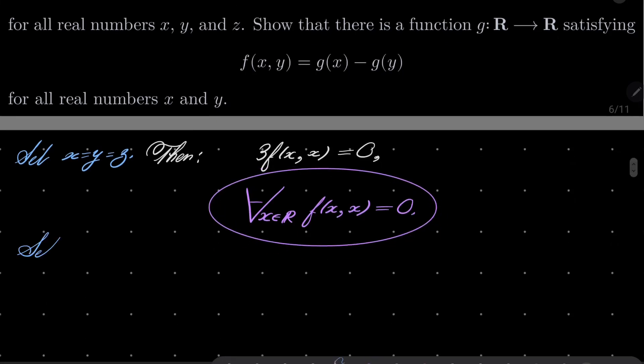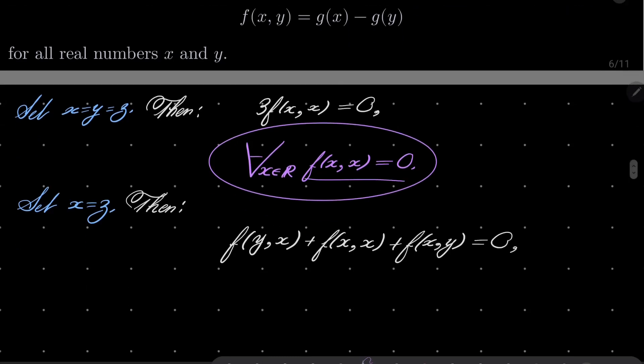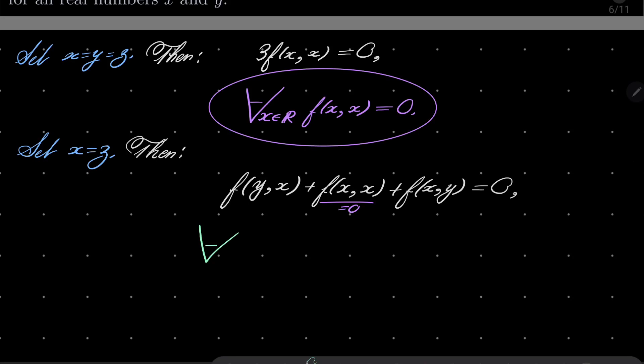Now let's set x to be equal z. Then we have the following: f of yz plus f of zx plus f of xy equals 0. But notice that f of xx equals 0, so we get f of yx plus f of xy equals 0. So we have the following: for every two real numbers x and y, f of yx is minus f of xy. So our function is anti-symmetric.